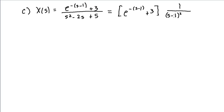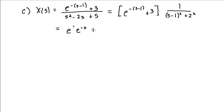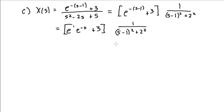Completing the square gives s squared minus 2s plus 1, and then I need to add 4 to match one of the patterns in the table — that's 2 squared. For the e to the minus s minus 1 term, I'm going to factor out the e to the minus 1, which leaves e times e to the minus s. I recognize the e to the minus s as a delay, and there's also the constant 3, all times the rest of the expression over s minus 1 squared plus 2 squared.